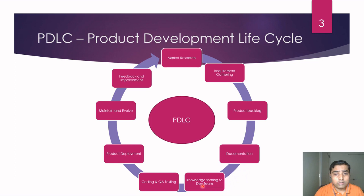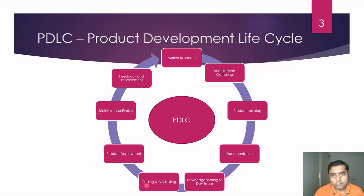Once we have documentation, we must go for knowledge sharing. We've covered market research, requirement gathering, product backlog, and documentation — but whatever information we've collected about the product we're going to develop must be shared with the development team and other stakeholders. Once that's done, we move to coding and QA testing, where we do product development followed by end-to-end testing. Then we go for product deployment or product launch. Post-launch, we maintain and evolve the product, take feedback from end users, plan for improvements, and this complete cycle keeps going on.